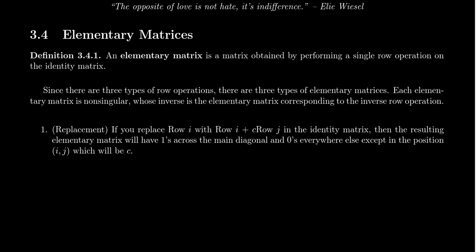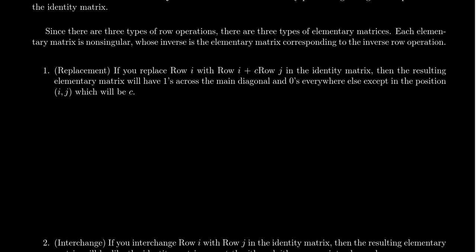We're going to see that each and every one of the types is actually itself a non-singular matrix. The one we use most often is replacements. A typical replacement operation looks like the following: we're going to replace row i with row i plus c times row j, where c is some specific scalar in the field — so we're adding to row i, c times row j. What does this do to the identity matrix?